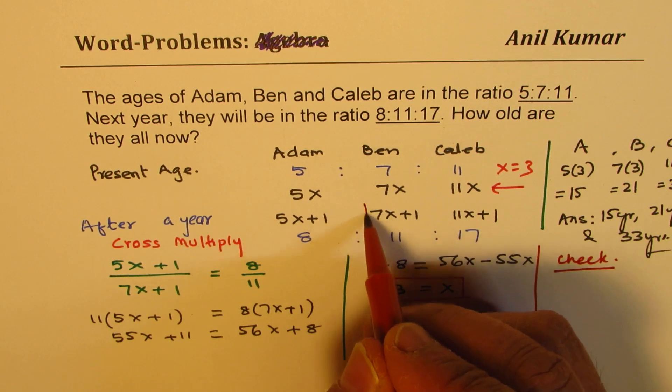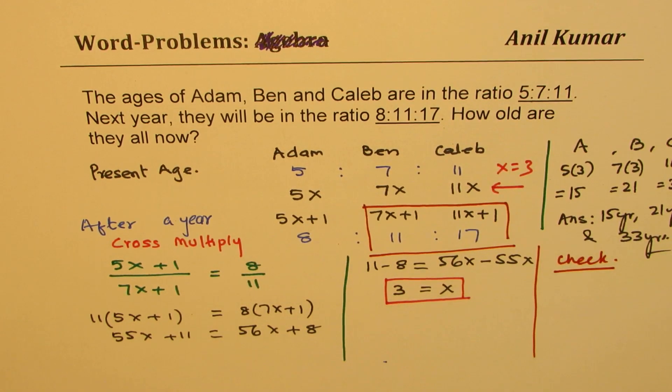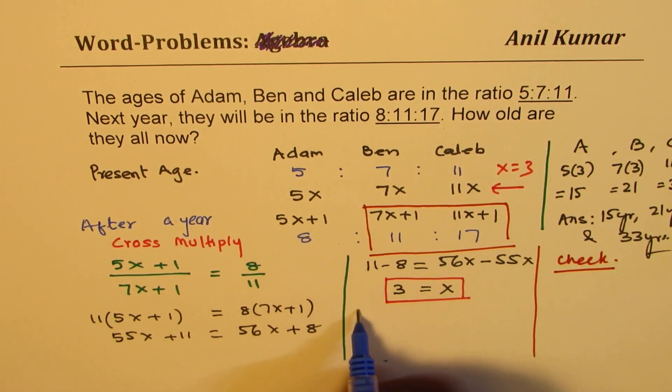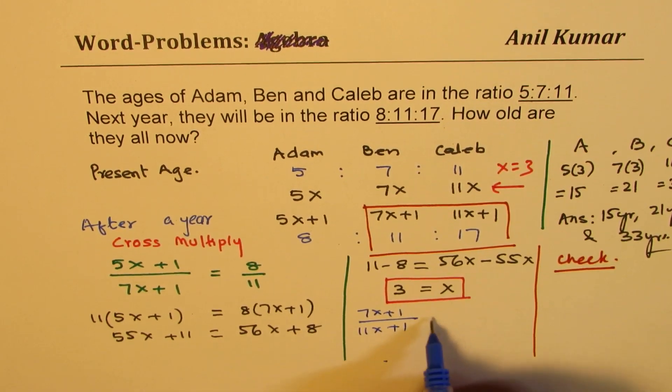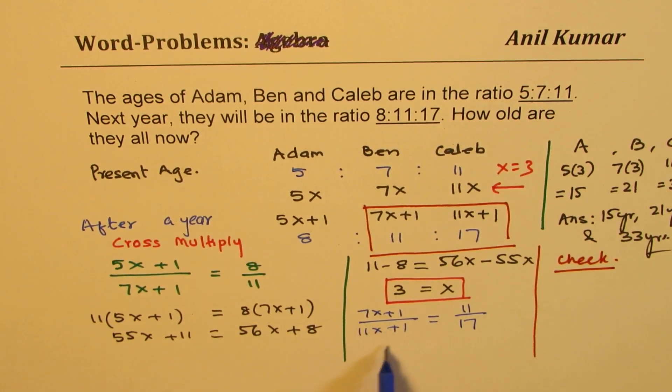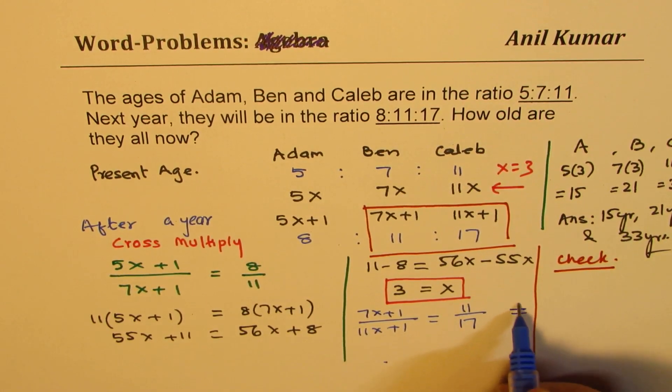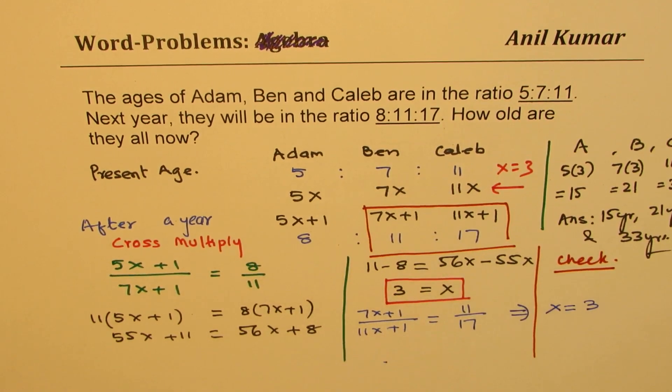Now, you could have also solved the second part of it. So I would like some of you to solve and verify. So the second part here is (7x+1)/(11x+1) = 11/17, cross multiply and check. That will also give you x equals to 3 and then you can get the same answer. So I hope that makes sense.